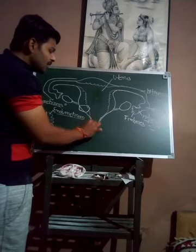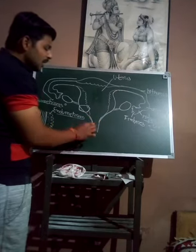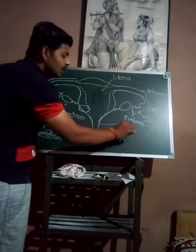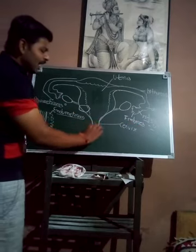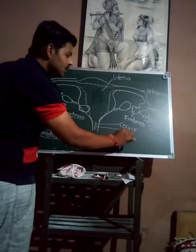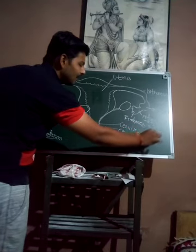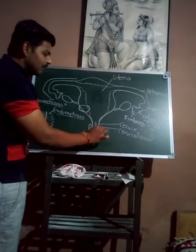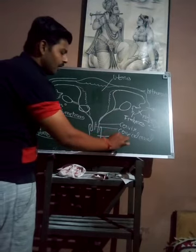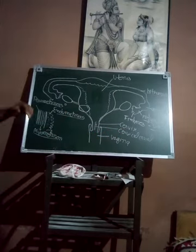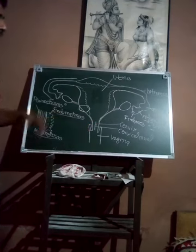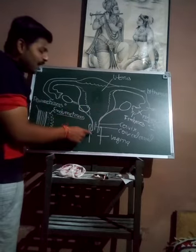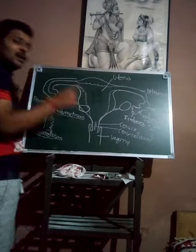The uterus continues into a narrow canal called the cervix, and the cavity within it is called the cervical canal. The cervical canal continues into the next part, which is called the vagina. The cervix acts as the opening of the uterus into the vagina — it is the opening through which the uterine cavity communicates with the vagina.